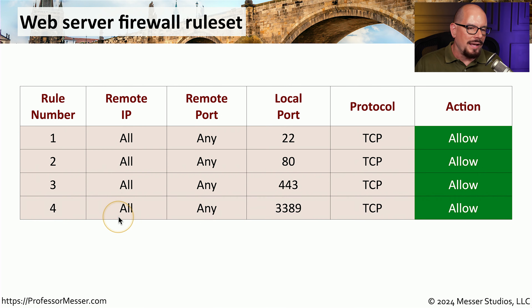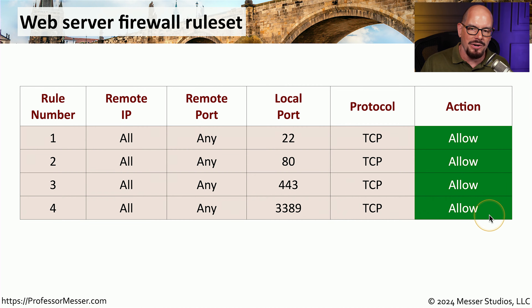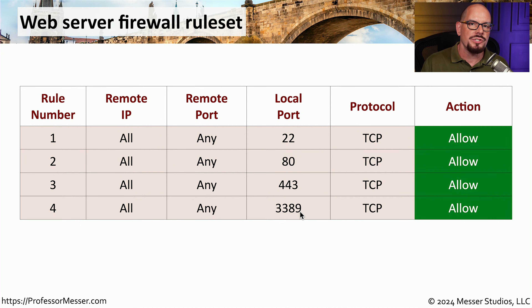Rule four allows any remote IP and port number to connect to TCP port 3389 on this device. All of these are allowed. Port 3389 is commonly associated with the Microsoft Remote Desktop Protocol, or RDP.